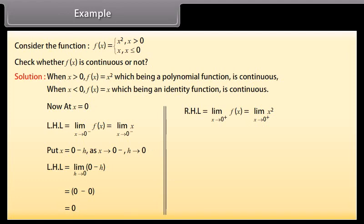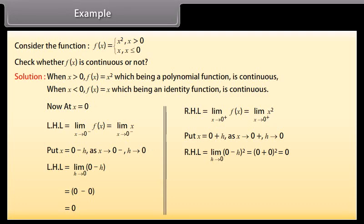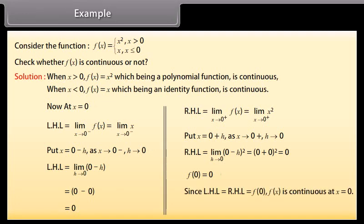Right-hand limit = limit as x approaches 0⁺ of f(x) = limit as x approaches 0⁺ of x². Put x = 0 + h; right-hand limit = limit h approaches 0 of (0 + h)² = 0. Now, f(0) = 0. Since left-hand limit = right-hand limit = f(0), f(x) is continuous at x = 0. Therefore, f(x) is a continuous function.